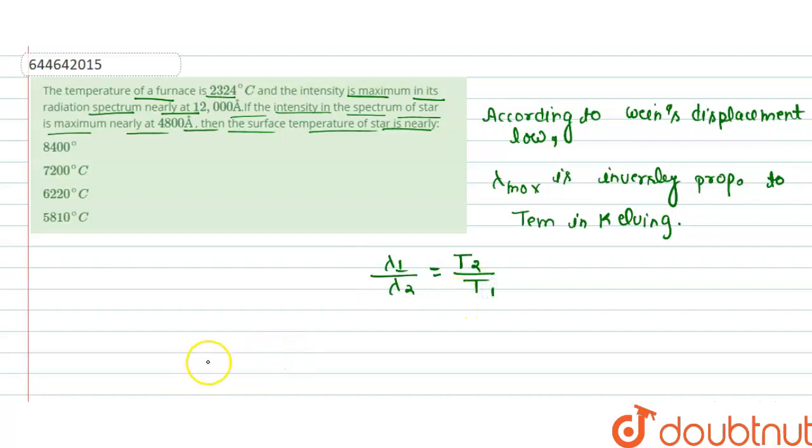We know that lambda 1 and lambda 2, that is 12000 divided by 4000. That is equals to T2 upon T1. T1 is 2324 plus 273.